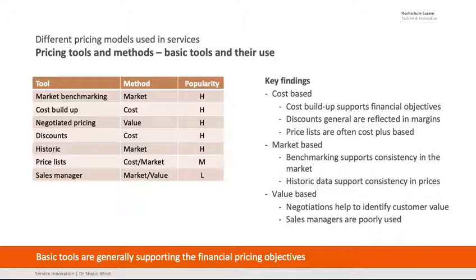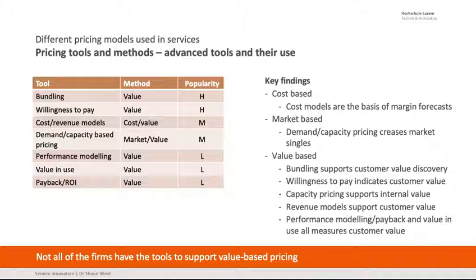Looking at all the tools and methods: benchmarking based on the market was popular; cost build-up was also very popular. Negotiated pricing was interesting because it began to show value when people negotiated price and scope at the same time. Discounts are really just looking at the cost base — you're handing money away. Price lists: some people like them, but not enough. Sales manager: we left it all to them, which is probably not the best way. Bundling is very important. Understanding the cost-revenue model was not done in all cases, which was surprising. Demand/capacity-based pricing: some firms didn't do it because they liked consistency in the market, but it means you're undercharging at times. Uber seemed to be doing surge pricing quite well. Value-in-use and payback/return on investment were low, which was a bit of a surprise. If I know a company has a CapEx approach with a two-year payback, I'm going to price it at 18–20 months — payback is a very simple tool.